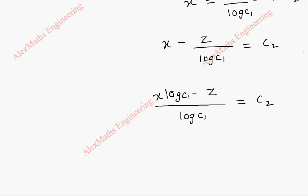And taking this log c1 to the other side, we get x into log c1 minus z equal to log c1 into c2. Anyway this whole thing is a constant.